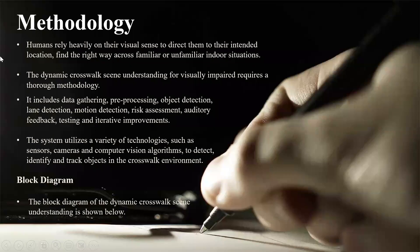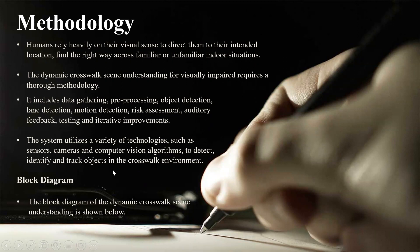Next is the methodology. Humans rely heavily on their visual sense to direct them to their intended location and to find the right way across familiar or unfamiliar indoor situations. The dynamic crosswalk scene understanding for visually impaired requires a thorough methodology. It includes data gathering, pre-processing, object detection, lane detection, motion detection, risk assessment, auditory feedback, testing, and iterative improvements. The system utilizes a variety of technologies such as sensors, cameras, and computer vision algorithms to detect, identify, and track objects in the crosswalk scene.